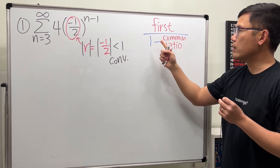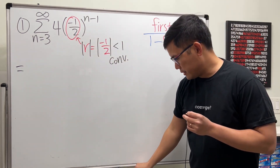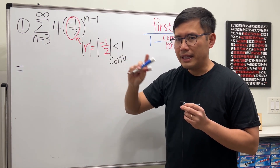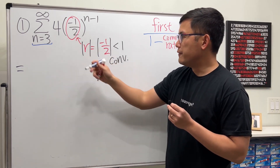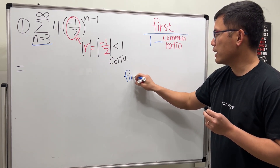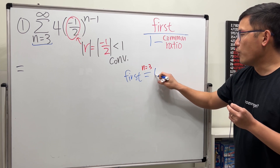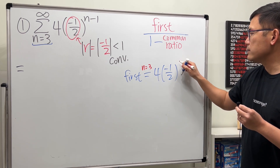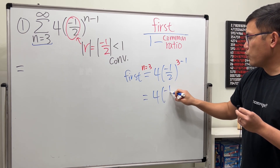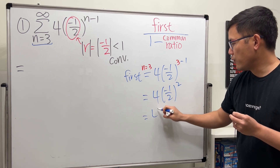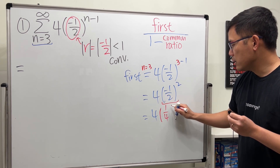If an infinite geometric series converges, it converges to the first term over one minus its common ratio. For this series, we need to figure out the first term. The first term is not four because n starts at three. So the first term is when n equals three: plugging in, we get four times negative one over two raised to the third minus one power, which is four times negative one over two squared — that's four times positive one over four.